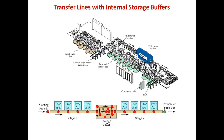The storage buffers divide the line into two stages that can operate independently for a number of cycles. As shown in this figure, the line is divided into two stages. Parts enter from one end and if there is any delay between stage one and stage two, the storage buffer supplies parts to stage two. The overall cycle efficiency depends on the efficiency of stage one and stage two combined.